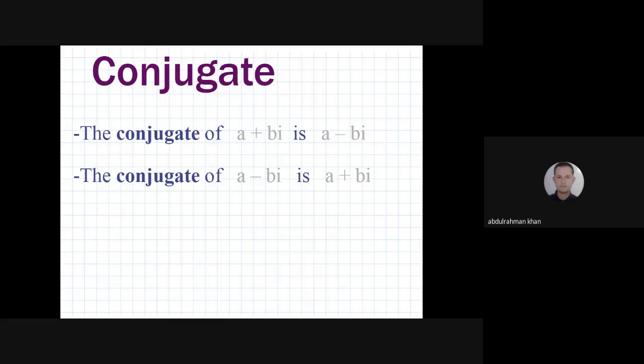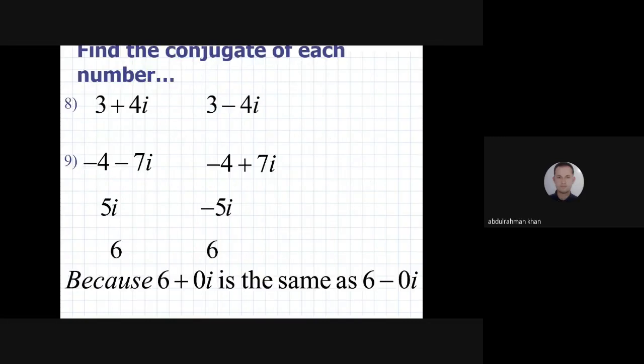For example, find the conjugate of each number. 3 plus 4i. The imaginary part is 4i. We have to change plus to negative sign. So the answer is 3 minus 4i.